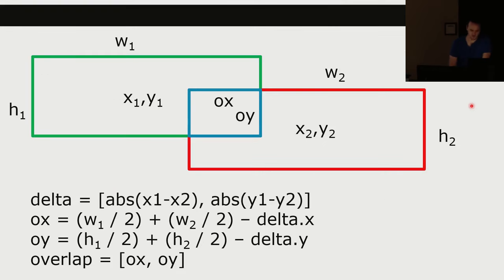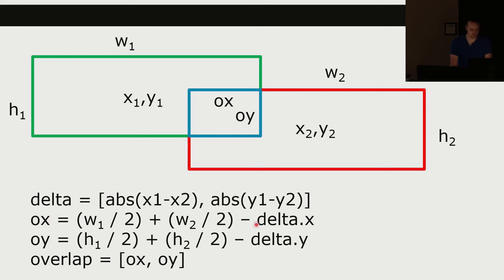Let's combine those together. We store delta as the distance between centers: dx is the absolute value of the difference of x's, dy is the absolute value of the difference of y's. Then overlap x (Ox) = half-width1 + half-width2 - dx. Overlap y (Oy) = half-height1 + half-height2 - dy. The overlap rectangle has size Ox by Oy.